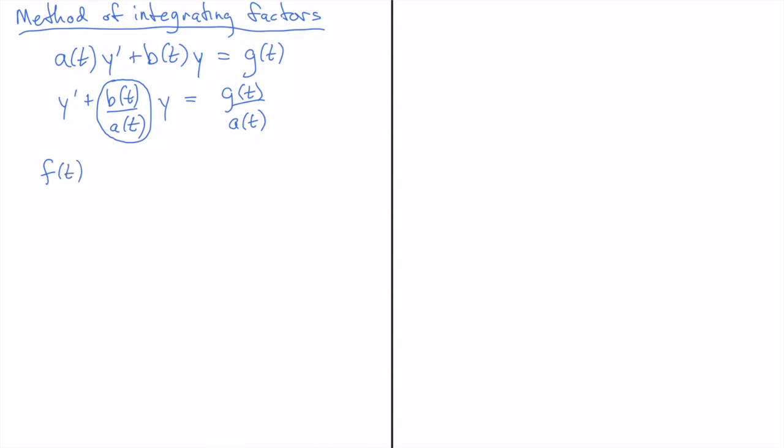This is a function that we're going to multiply the equation through by and that function is going to be e to the antiderivative of b of t over a of t dt.